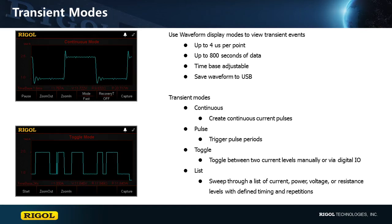Continuous, Pulse, which allows a single trigger per pulse period, and Toggle, which is a trigger per state change. The most complex option is List Mode, which allows you to sweep through a list of current, power, voltage, or resistance levels with defined timing and repetitions.